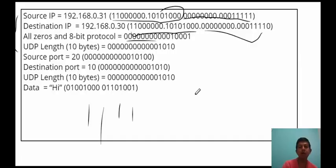At the receiver side, all these 16-bit numbers including the checksum are added. If the result comes out to be all ones — sixteen ones — the receiver understands no error has taken place during transmission. If there is some error, the result will not be all ones. This is how the UDP checksum is calculated, inserted, and verified. This finishes our UDP segment structure; in the subsequent class we will take a full example of sending a UDP segment, and after that we will go into TCP.